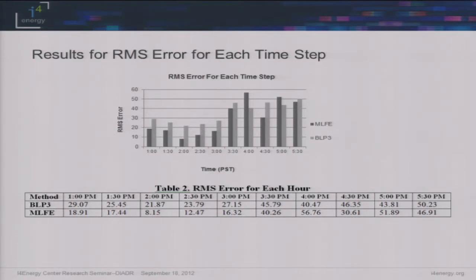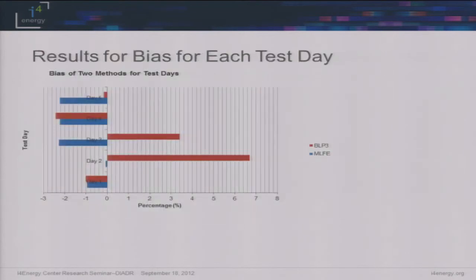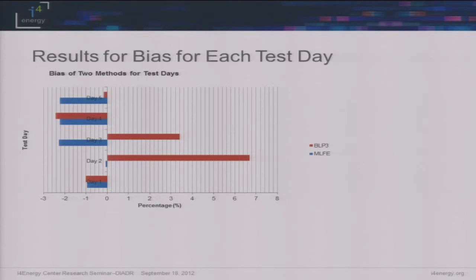I also measured the bias for each of these test days. Our bias was a little shifted — we were under-predicting relative to the actual. But the max we were under was about 2.02%, which is pretty good. It just means that with our model we would actually probably be doing better than we say we're doing, because we're predicting that we'd be using less without any strategy implemented.